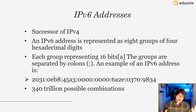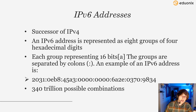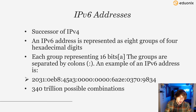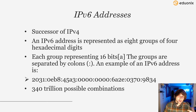IPv6 addresses are represented as eight groups of four hexadecimal characters, so they look completely different from what we're used to with IPv4. Each group is represented by 16 bits, and the groups are separated by colons. There's an example shown on screen. Keep in mind it is ugly — to memorize an IPv6 address on your own would be a nightmare, so you don't have to. That is what DNS servers are for, which we'll talk about later.